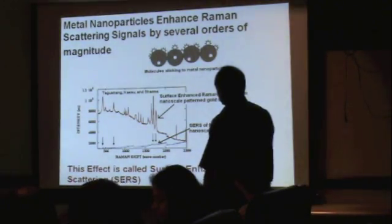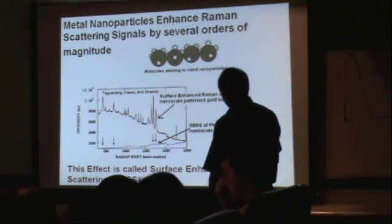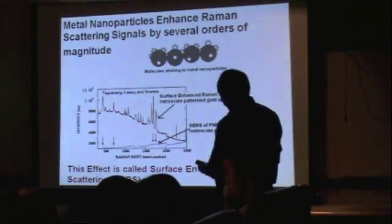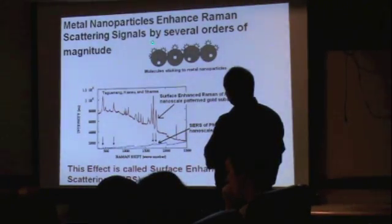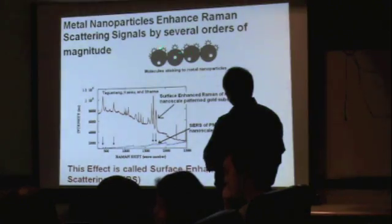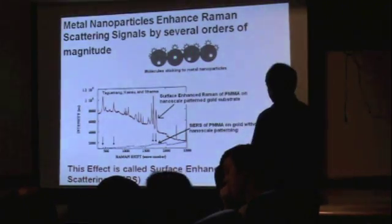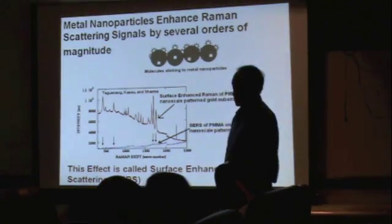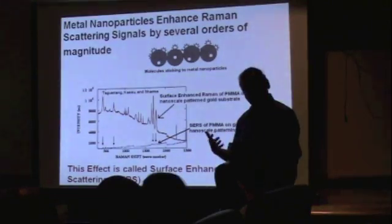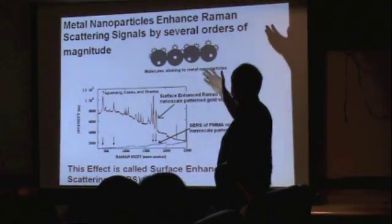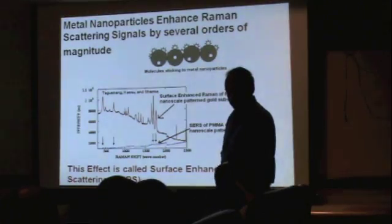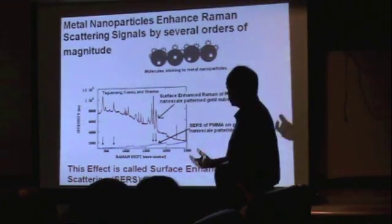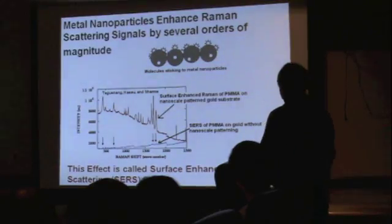But people have seen that if you have nanoparticles of metals, like gold or silver, and if you have your molecules sticking on the surface of these metal nanoparticles, then under certain conditions, we can enhance this Raman spectrum millions of times. That's the reason why it's called surface-enhanced Raman spectroscopy. And it involves nanoparticles of gold and silver.